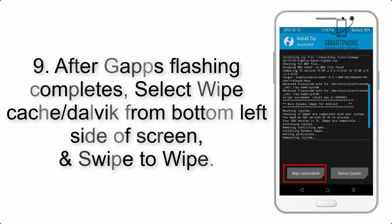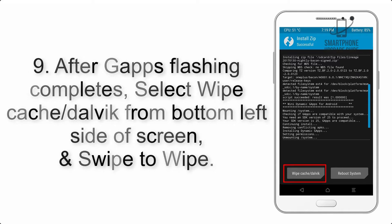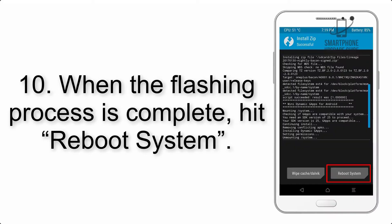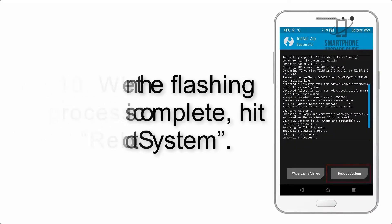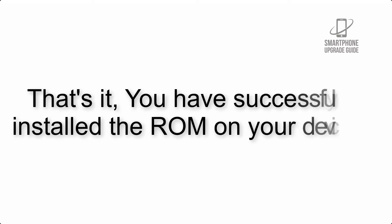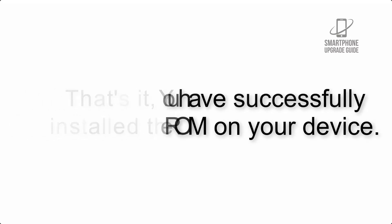Step 9: After GApps flashing completes, select Wipe Cache and Dalvik from the bottom left side of the screen and swipe to wipe. Step 10: When the flashing process is complete, hit Reboot System. That's it — you have successfully installed the ROM on your device.